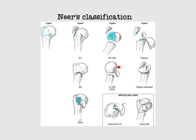Alternatively in three-part fractures, the lesser tuberosity, the humeral head, and the shaft can be the three fragments. A four-part fracture means four fragments: the greater tuberosity, the lesser tuberosity, the humeral head, and the rest of the shaft are all fractured and displaced.